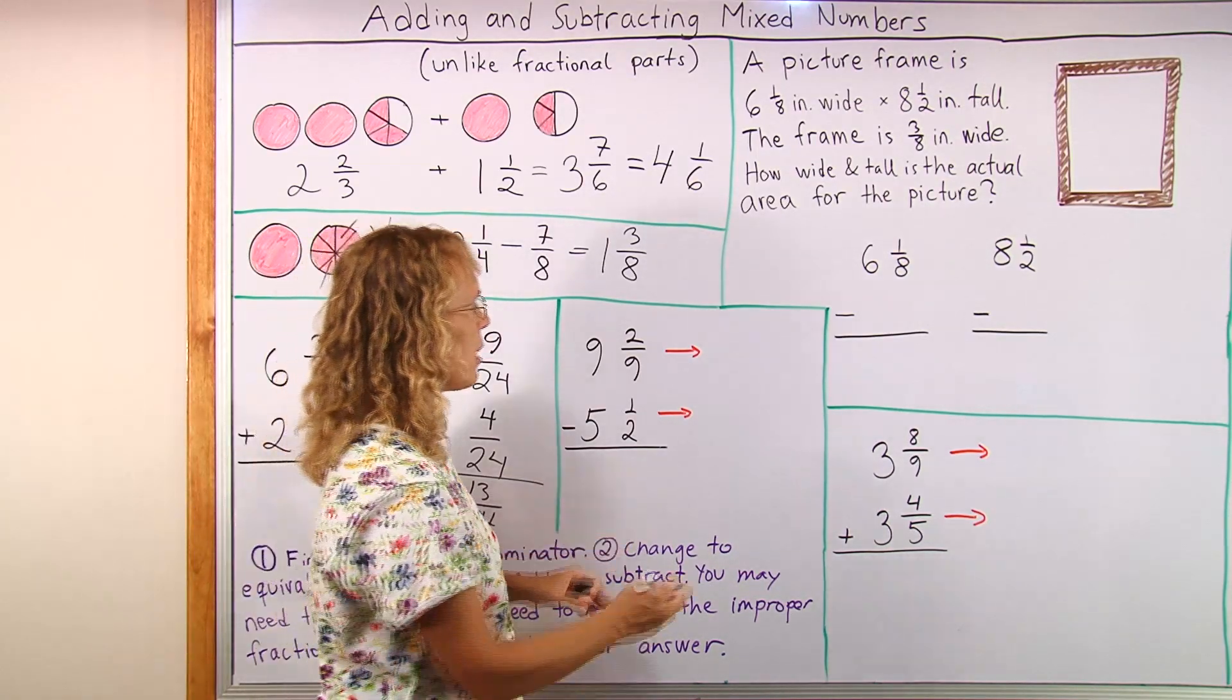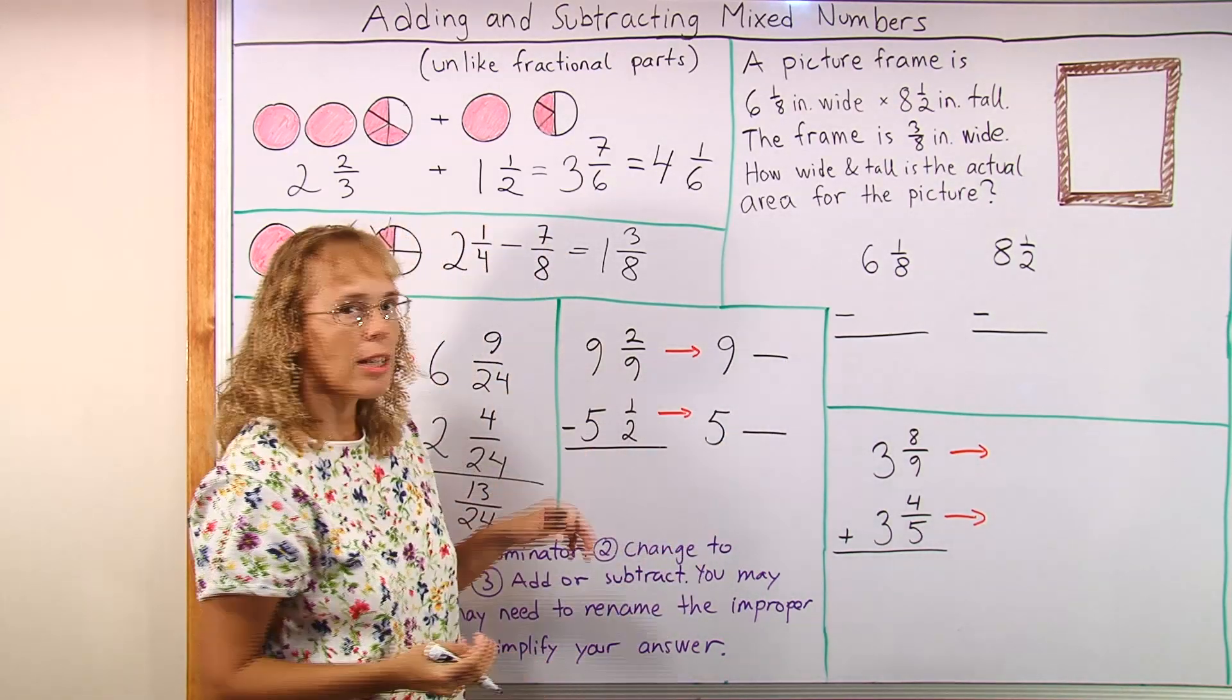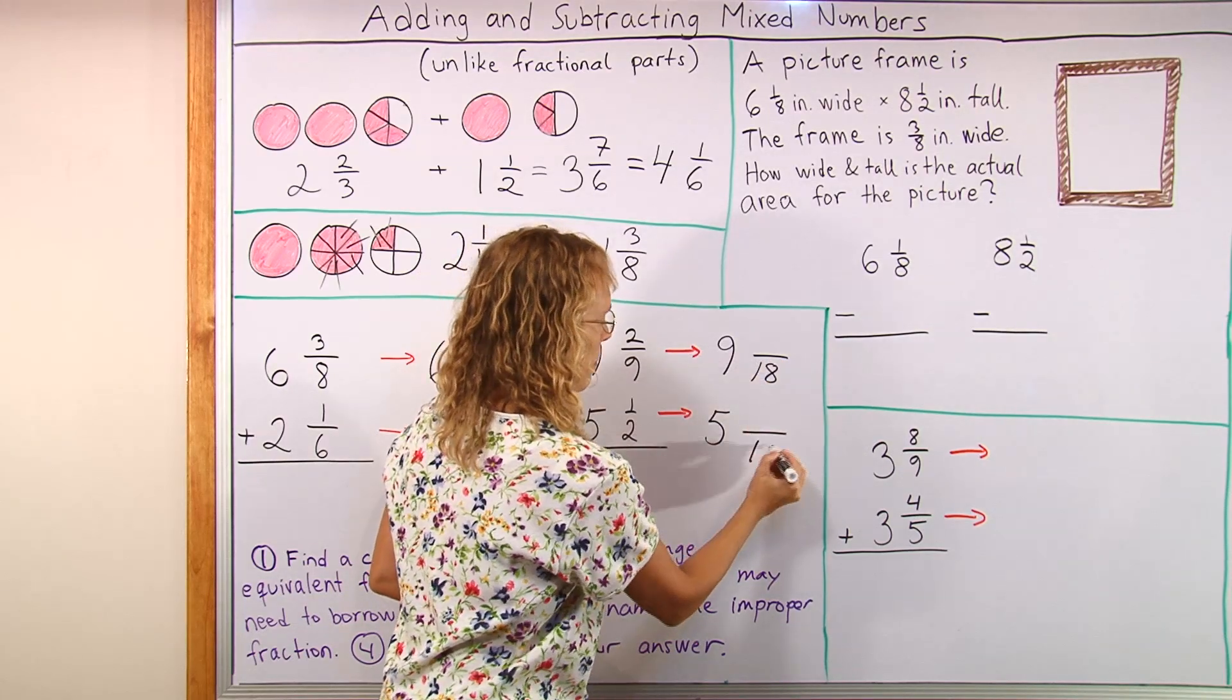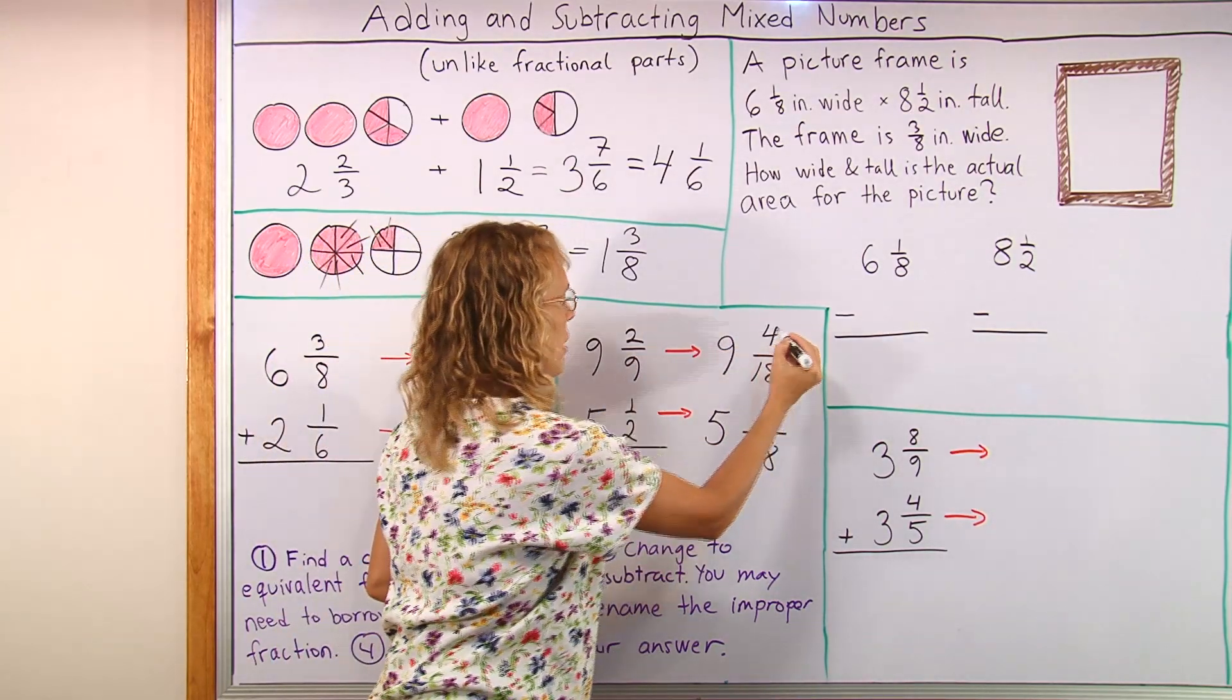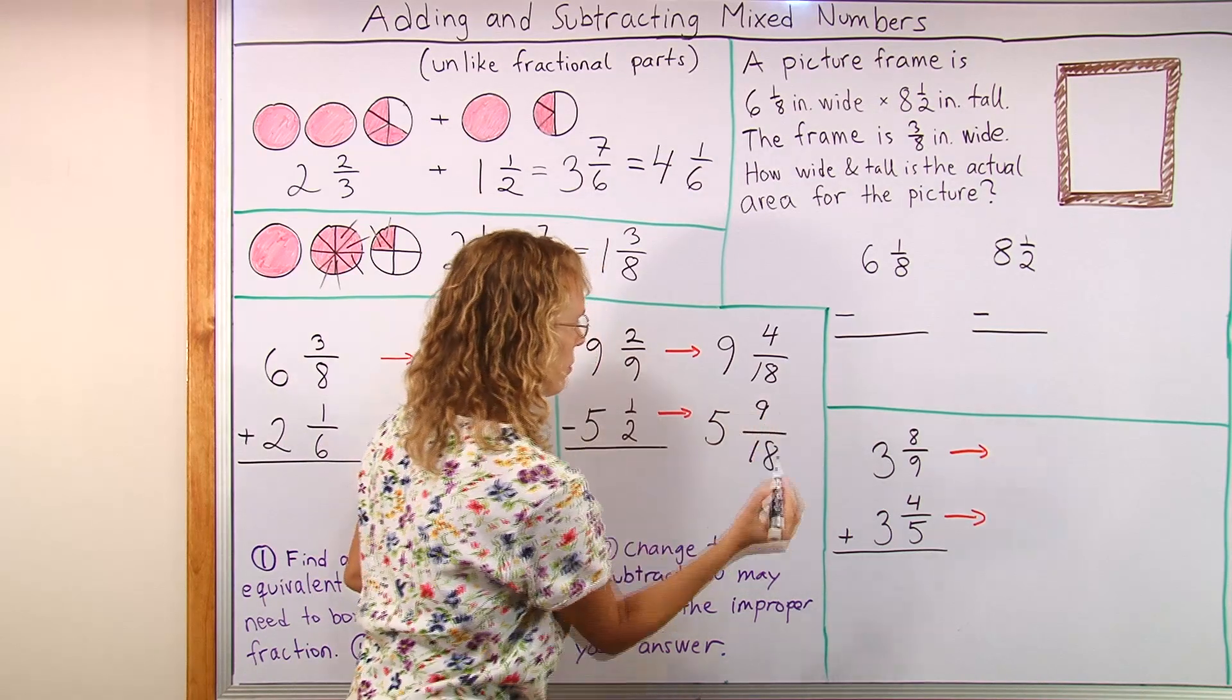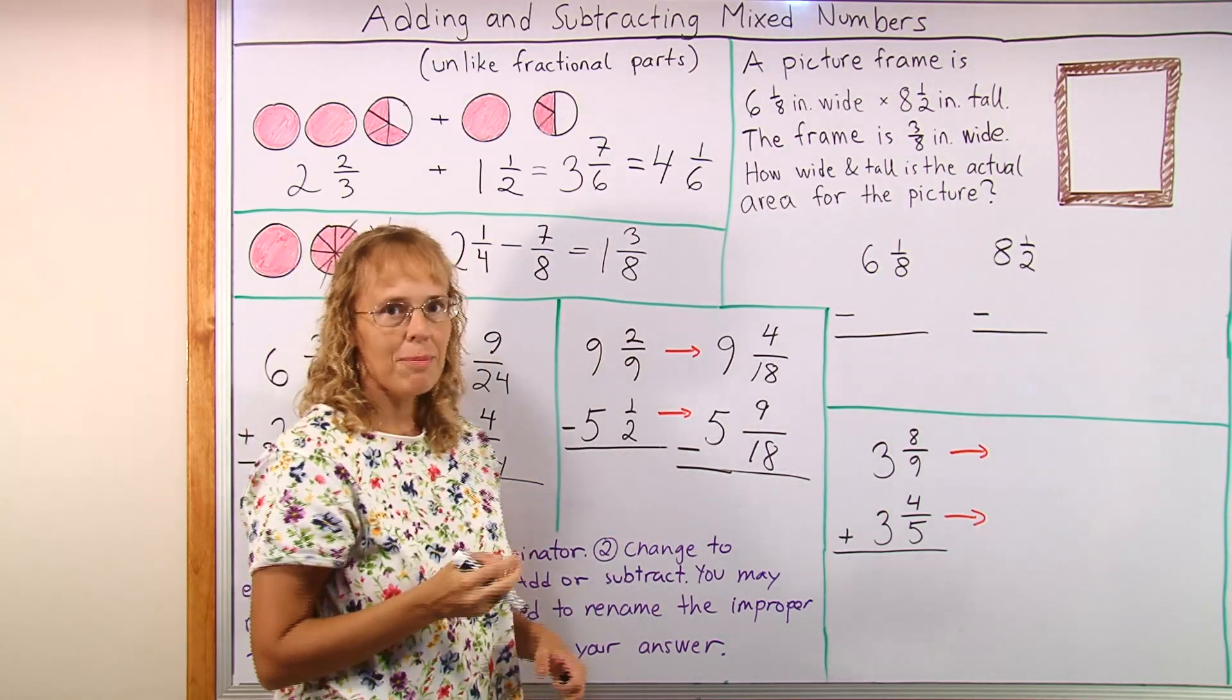In the subtraction the same thing. Let's rewrite it here using a common denominator which this time we will use 9 times 2 is 18. And 9 times 2 is 18 so 2 times 2 is 4. And here 2 times 9, 1 times 9, is 9. And now okay ready to subtract? Well almost.